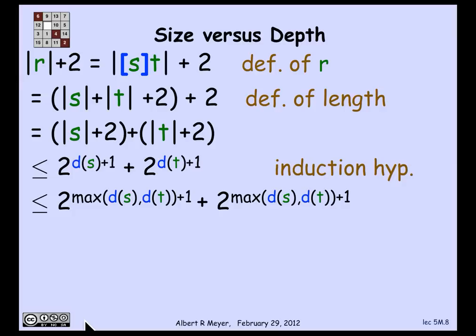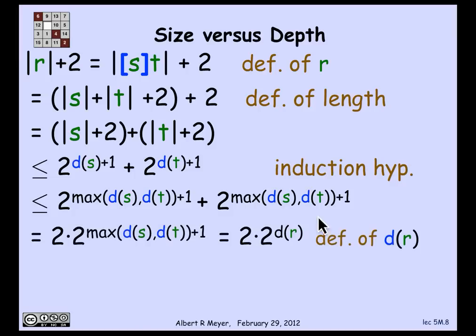Now we play a nice trick to make the two exponents look alike. The depth of s is less than or equal to the max of depth of s and depth of t, and likewise for depth of t. So in both terms we can replace depth of s by max(depth s, depth t), giving us the same term twice, which is simply twice 2 to the max depth. By definition of the depth of r, that equals twice 2 to the depth of r, which is 2 to the depth of r plus 1. By plugging into the definitions and structural induction, I've proved the inequality holds for the recursively defined depth function.